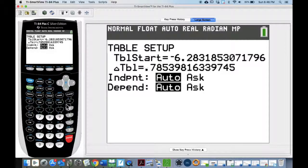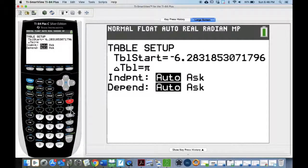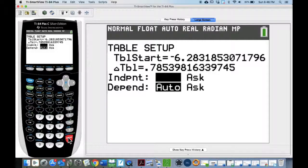And our change in table, let's set that up to be pi over 4 as well. So 2nd pi divided by 4, enter. And once again, that pi divided by 4 is .785, etc. All right.